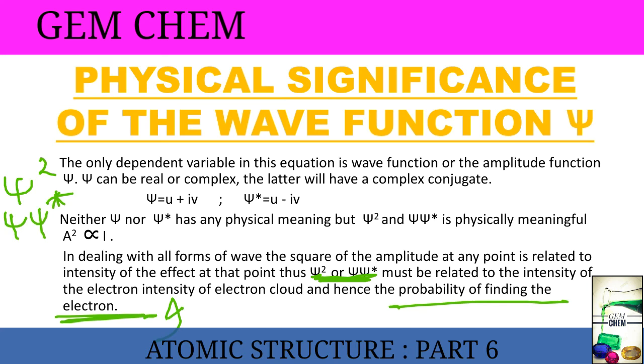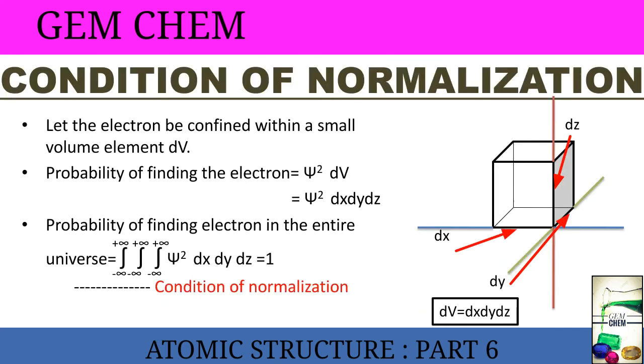Now we will see the condition of normalization. What is the condition of normalization? Previously we have discussed a little while discussing boundary conditions. Why is condition of normalization required? In order to find out the probability. We consider an electron to be confined in a small volume element dV. This is the small volume element. This is the z-axis, the blue one is the dx (x-axis), and this is the dy. We have taken a small length to define this dV portion.